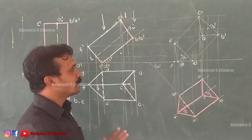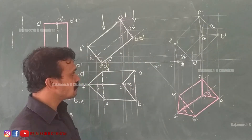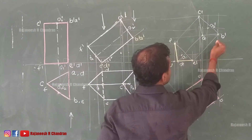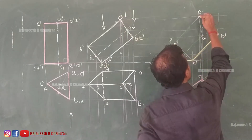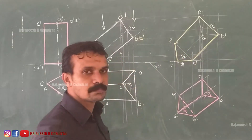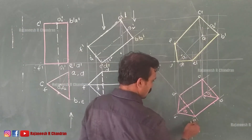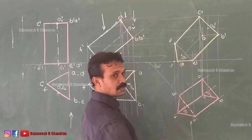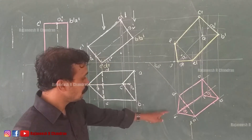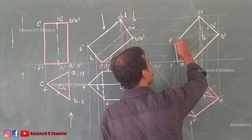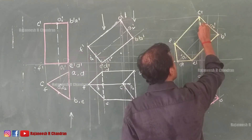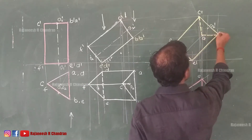The entire image has been completed. Now we have to check the visibility. This is the boundary and the boundary is complete. As we are observing from the front, base DEF is nearer to the observer and BCA is farther. So DEF will be visible. The other base BCA will become invisible.